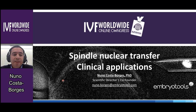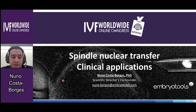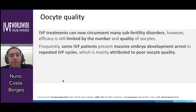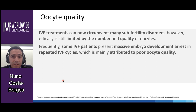Maternal spindle transfer is a technique that was originally proposed to prevent the transmission of mitochondrial diseases, but we wanted to explore whether it could also be a useful tool to overcome infertility problems related to poor oocyte quality. IVF treatments can now circumvent many subfertility disorders; however, the efficiency of these treatments is still limited by the number and quality of the oocytes. It is frequent that IVF patients present massive embryo development arrest which persists in repeated IVF cycles, and nowadays there are not many options for these patients.